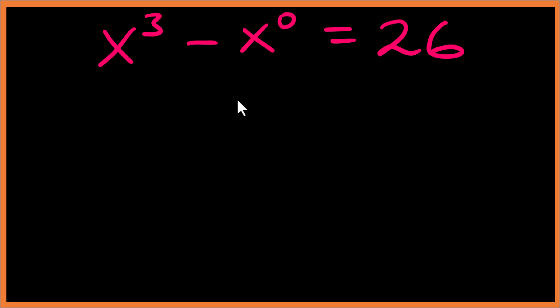Welcome to another video. We are given x to the power 3 minus x to the power 0 equals to 26.